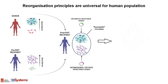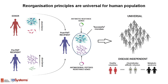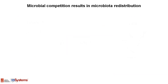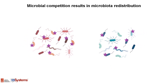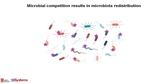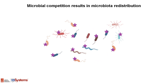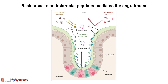Interestingly, the colonizer organization features are universal for the human population and independent of the disease. Redistribution of recipient gut microbiota structure is driven by competition between the donor-derived and recipient-derived microbes. The resulting microbiome is likely composed of the most abundant species with the highest competitive properties. Thus, we assume that the resistance of gut microbes to host-derived antimicrobial compounds mediates engraftment.